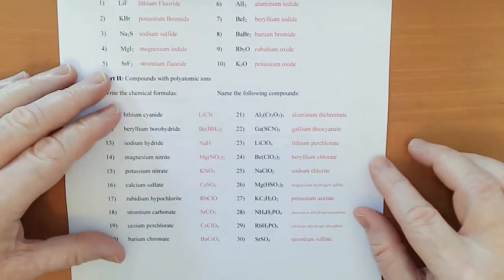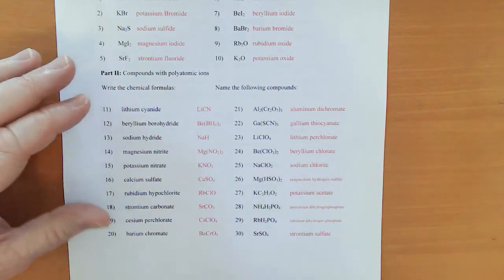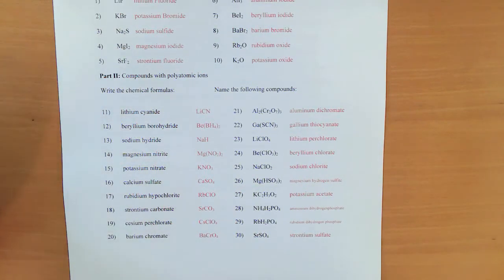Then over here, aluminum dichromate, gallium thiocyanate, lithium perchlorate, beryllium chloride, sodium chloride, magnesium hydrogen sulfite, potassium acetate, ammonium dihydrogen phosphate, rubidium dihydrogen phosphate, and strontium sulfate.